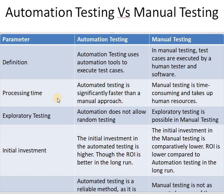Our next parameter is processing time. Automation testing is faster as compared to manual testing, whereas manual testing is time-consuming because it is done by a human being, while automation testing uses automatic tools which are faster.